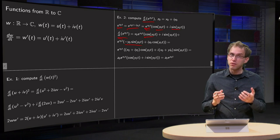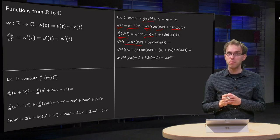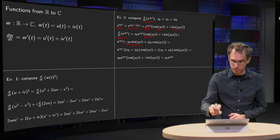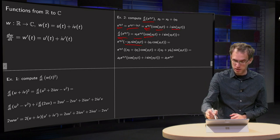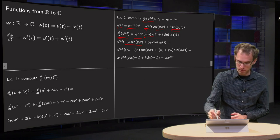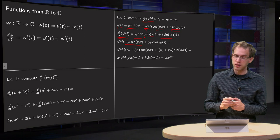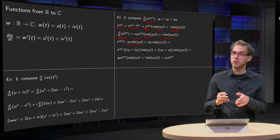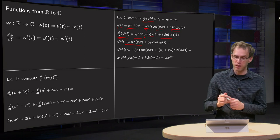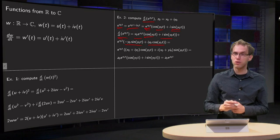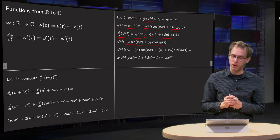And we differentiate the imaginary part: we get x₀·e^(x₀·t)·sin(y₀·t), and we also get e^(x₀·t) times the derivative of sin(y₀·t), giving i·y₀·cos(y₀·t). So there we are.